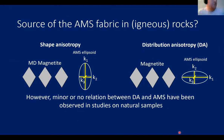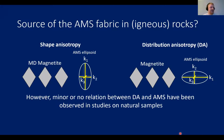I'm going to talk about the source of AMS fabrics in rocks, and in particular igneous rocks. In igneous rocks the main magnetic carrier is usually titanium magnetite or magnetite, and you essentially have two types of petrofabrics that might contribute to the AMS fabric. The first is shape anisotropy, where the AMS ellipsoid is controlled by the axes of the magnetite — for example, in multi-domain magnetite.